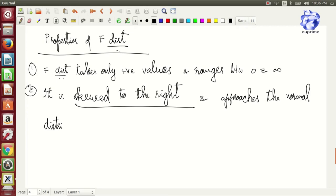And n1 and n2, the rules are obviously the degrees of freedom.